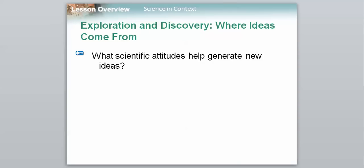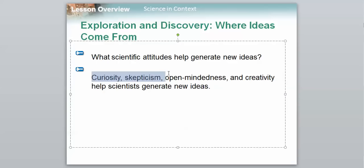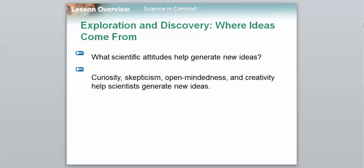So we're going to start by talking about some attitudes that help generate new ideas. As the world's growing, technology is advancing, new problems are coming, so you have to have a certain attitude within the context of science to help you be successful. Some attitudes—don't worry about jotting these down now, but as we go we're going to give a little bit more about each one. Curiosity, skepticism, open-mindedness, and creativity all help scientists generate new ideas. If you want to be a successful scientist, which all of us have the definite capability of being, you need to possess at least these characteristics right here.